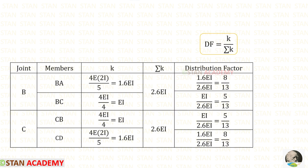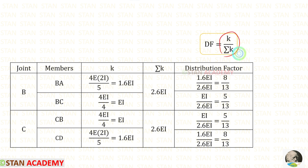Now let us find sigma K. At joint B, adding the two K values gives 2.6EI. At joint C, adding both stiffness values also gives 2.6EI. Using the formula K/sigma K, we can now find the distribution factors for all members.